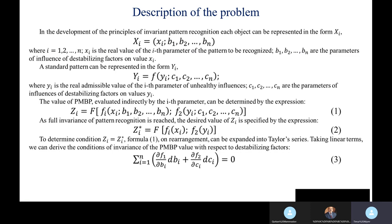From c_1 to c_n are the parameters of the influences of establishing factors of values Y_e. The value of the PMBP evaluated indirectly by the i-th parameters can be determined by expression 1. As full invariance of parameter recognition is reached, the desired value of X_e is specified by expression 2. To divide condition Z_e equals Z_e star, a form of 1 on rearrangement can be expanded into Taylor series. Taking linear terms, we can derive the condition of the invariance of the PMBP value with respect to the establishing factors, represented in expression 3.